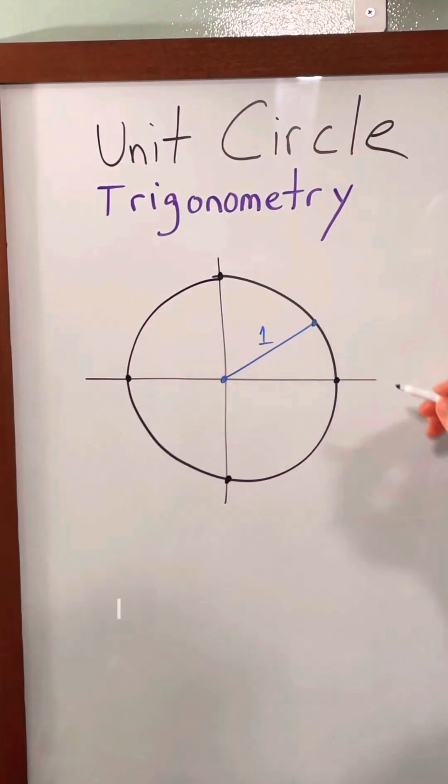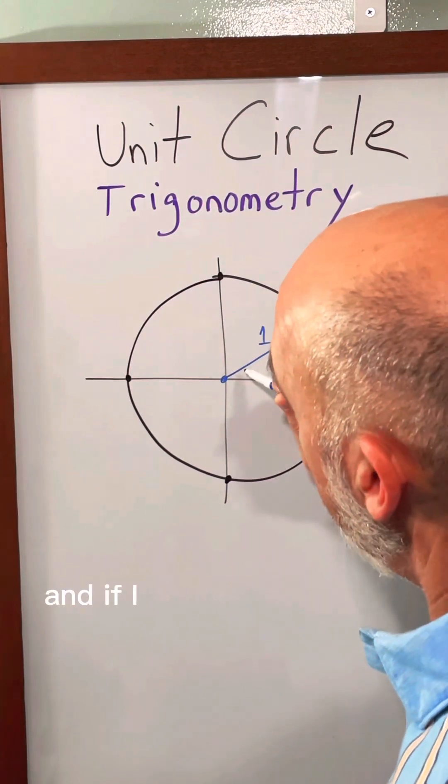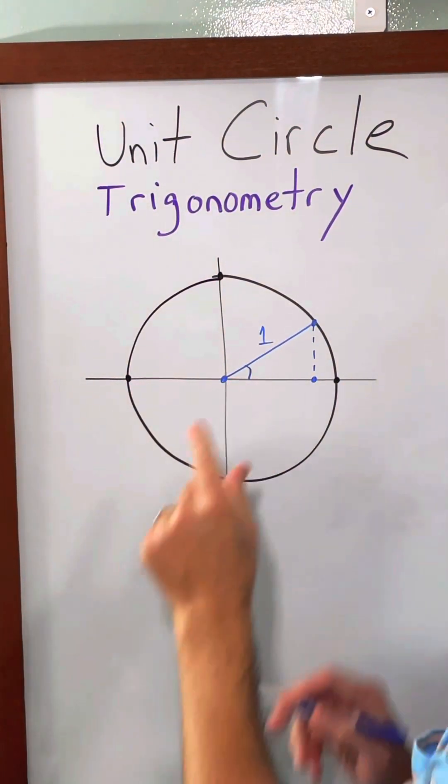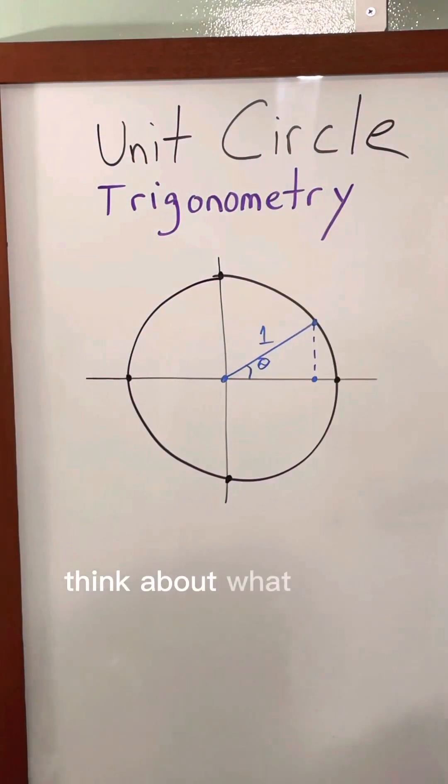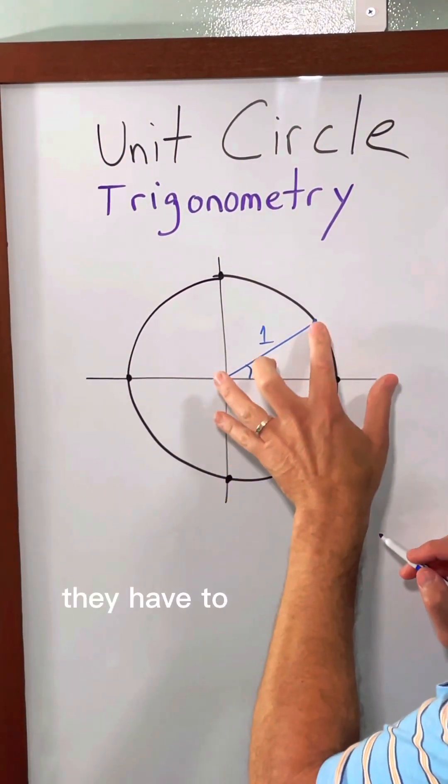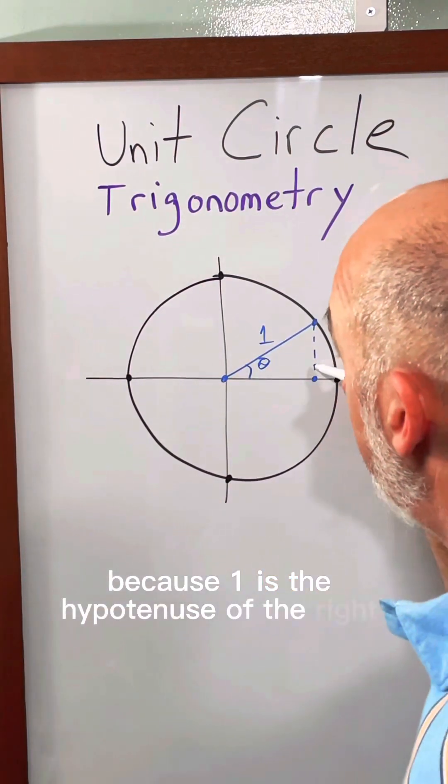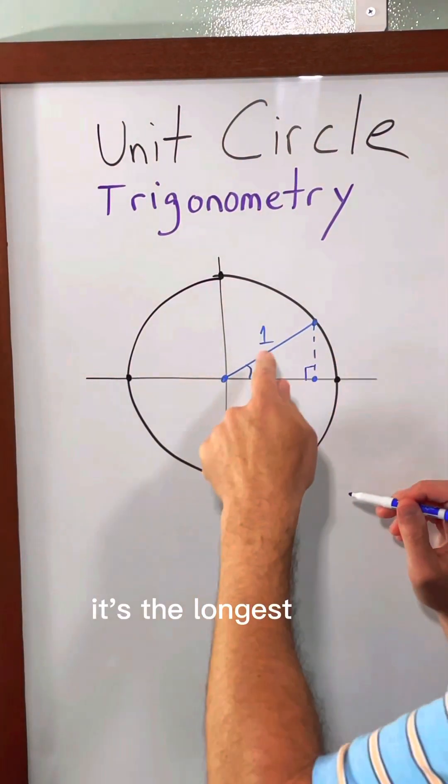So for this example I have a triangle, and if I always look at the angle that comes from the center, the central angle, we'll call it theta. Think about what these other lengths could possibly be. This length, they have to be shorter than one because one is the hypotenuse of the right triangle. It's the longest side.